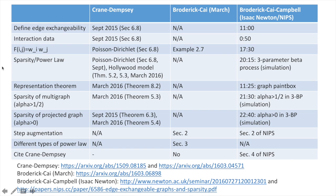Here's a list of some of the ideas that have been presented in the work on edge exchangeability. The first column is work by Crane and Dempsey appearing in papers posted on arXiv in September of 2015 and March of 2016. The second column is the work presented by Broderick and Kye in their March 2016 arXiv paper. The third column is from a presentation in July to the Isaac Newton Institute given by Diana Kye — video of which can be found at the provided link — and also material contained in the recent NIPS paper by Broderick, Kye, and Campbell.